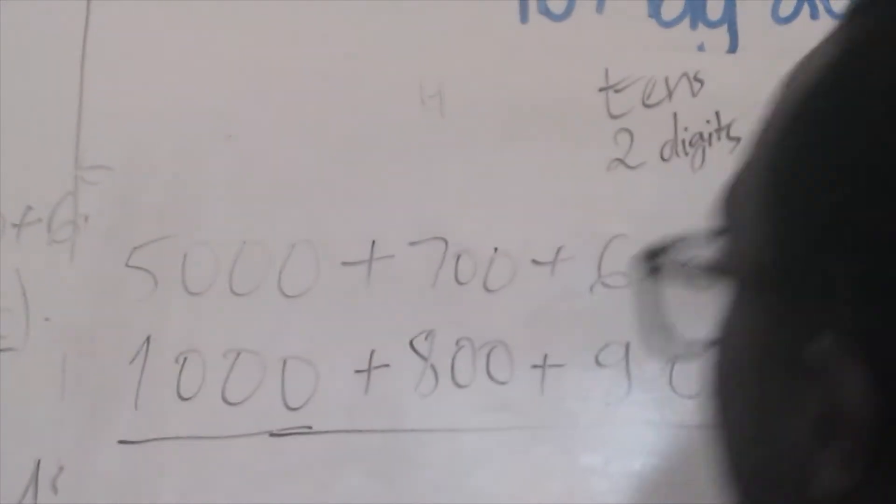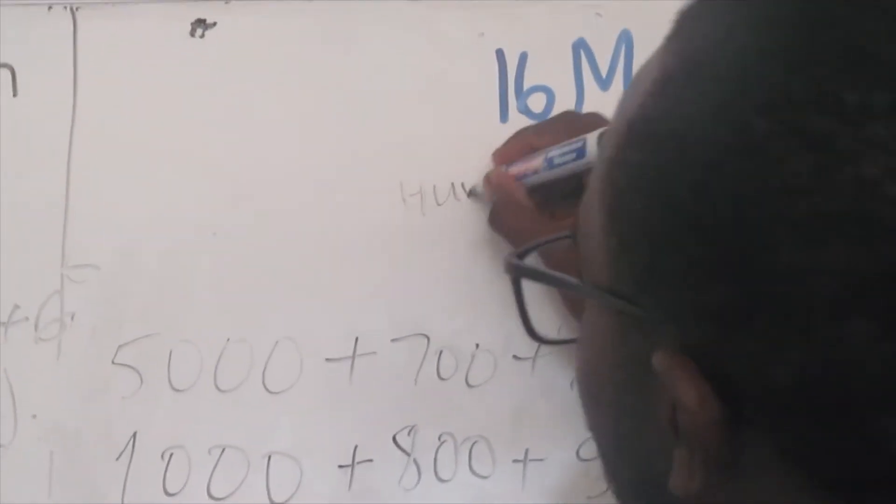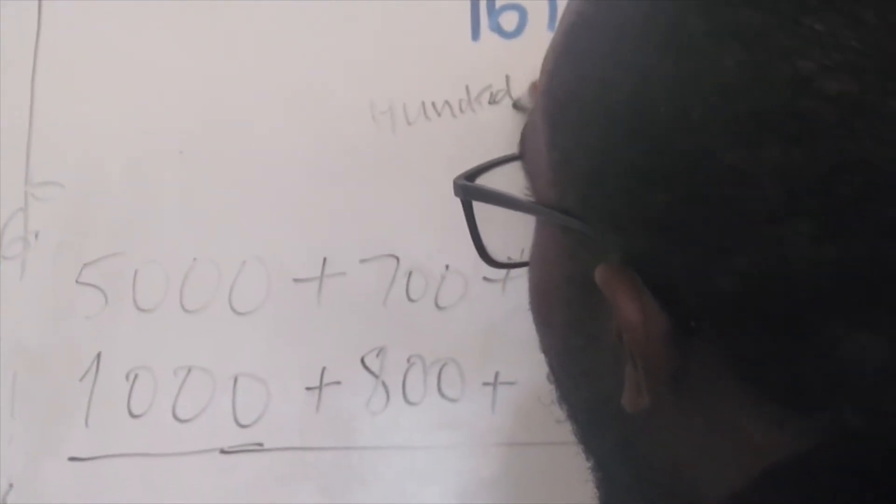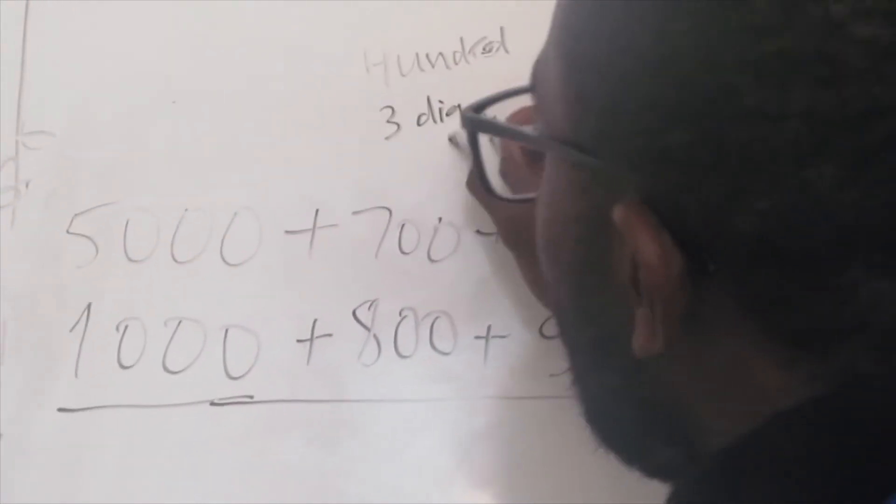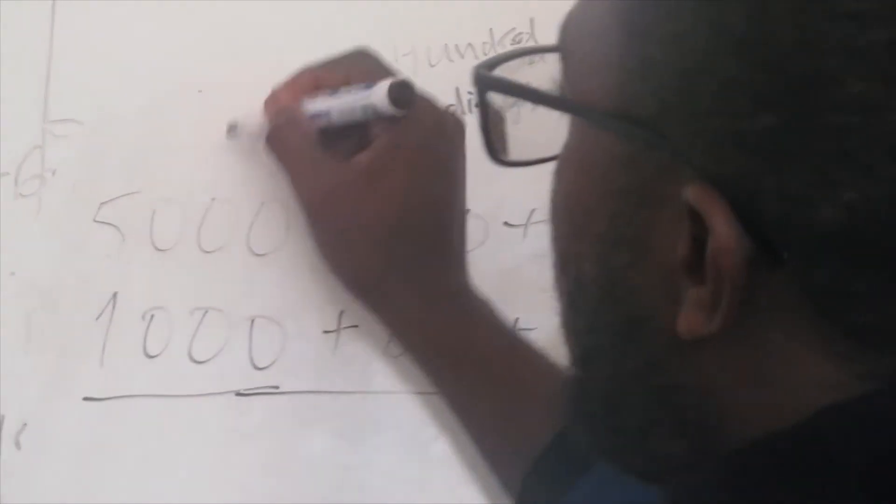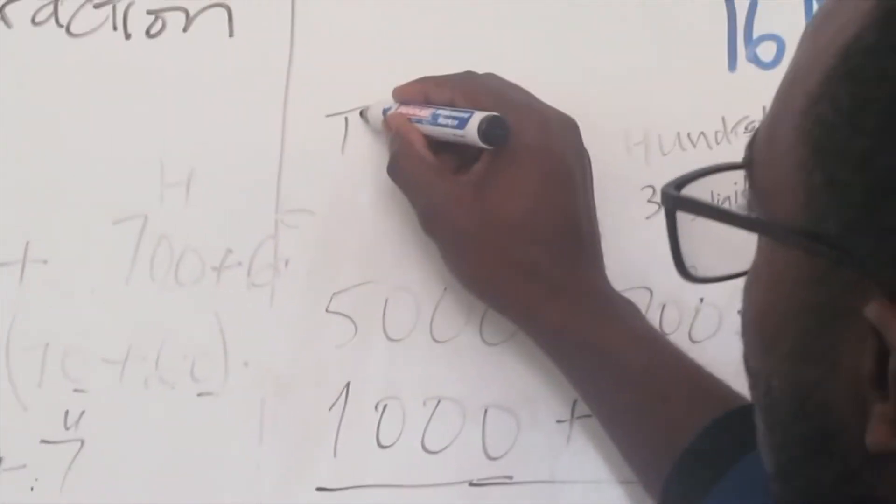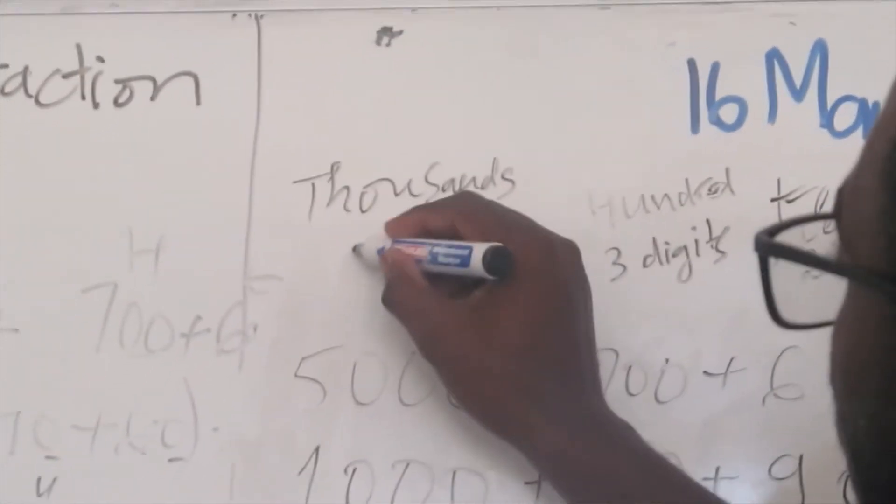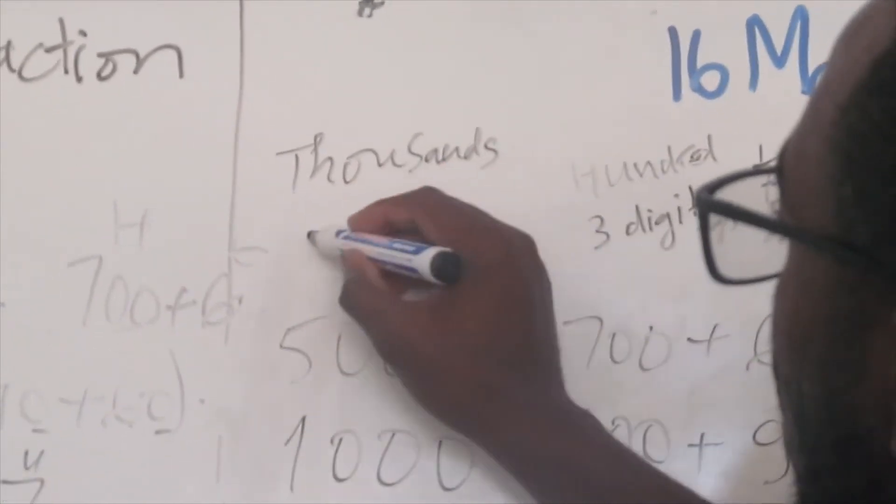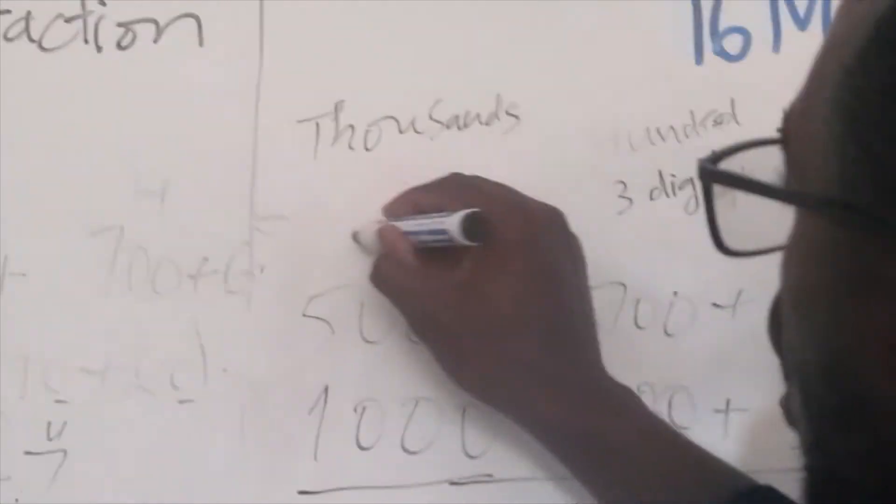The third one is our hundreds line. So here you get how many digits? Three digits. And the last one is our thousands line. Here you get four digits.